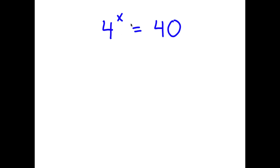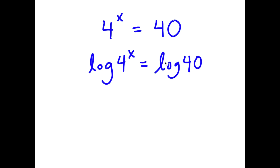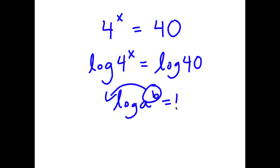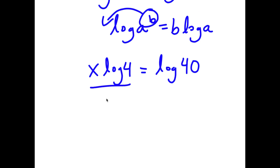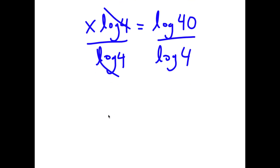In this problem, I have 4 to the power of x is equal to 40. To solve this, I'm going to start by taking the log on both sides. So I have log of 4 to the power of x is equal to log of 40. If I have something in the form log of a to the power of b, I can move b to the front, so this equals b times log a. So I can move x to the front: x times log 4 is equal to log 40. I divide both sides by log 4 to isolate x, so these two log 4s cancel out, leaving x is equal to log 40 over log 4.